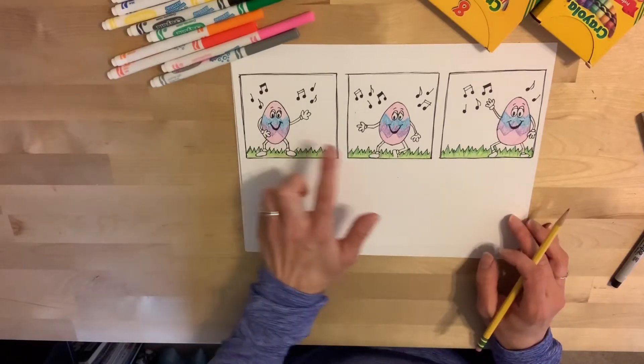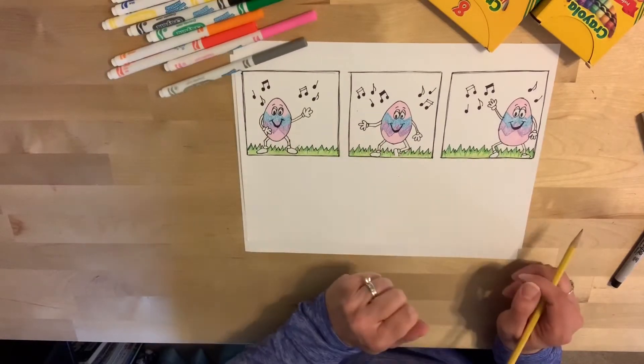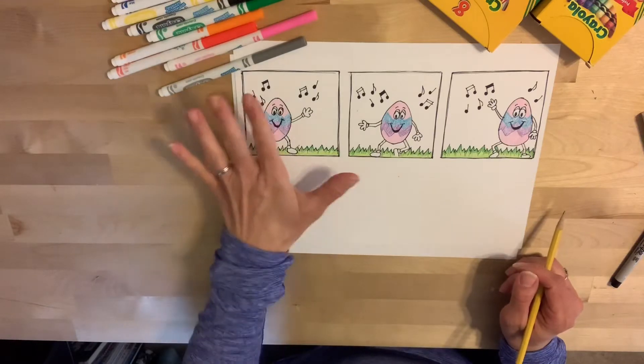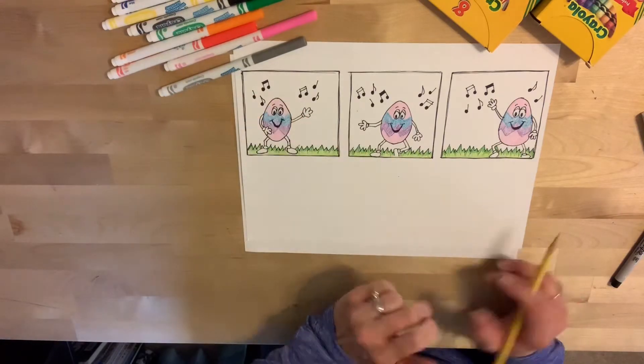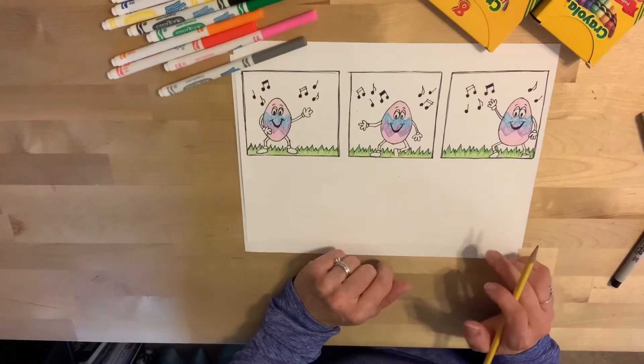Comic strips are normally broken up into blocks like you can see here with my dancing egg. So the first thing you want to do is make your three blocks because we're just going to do one with three blocks. Start pretty simple this week.